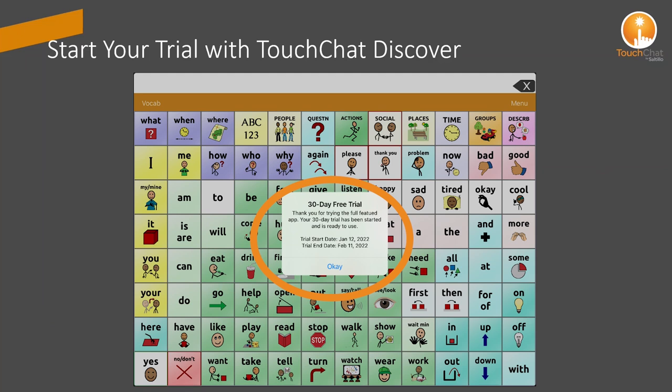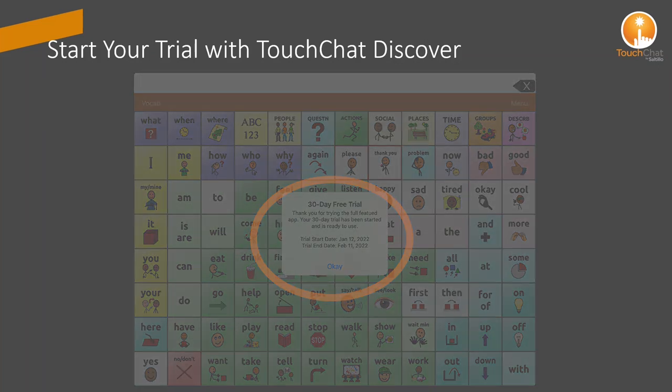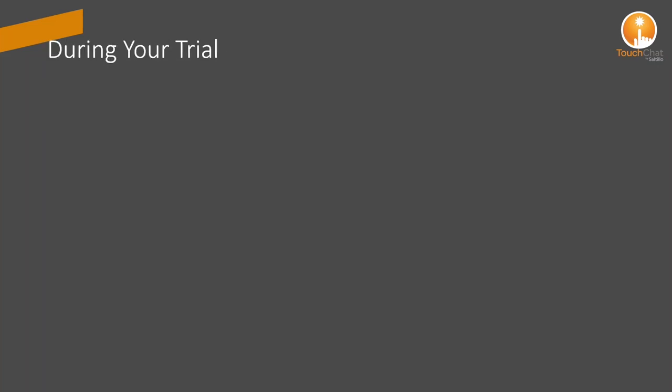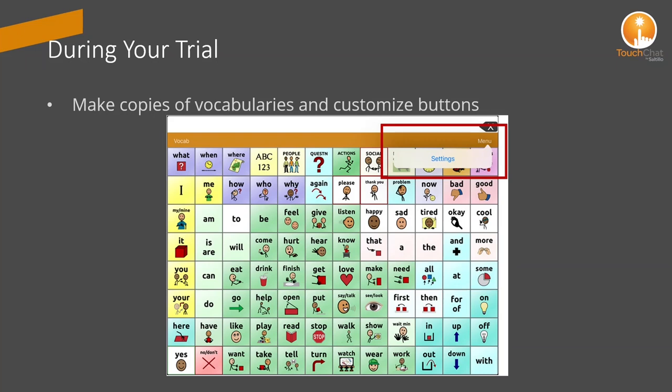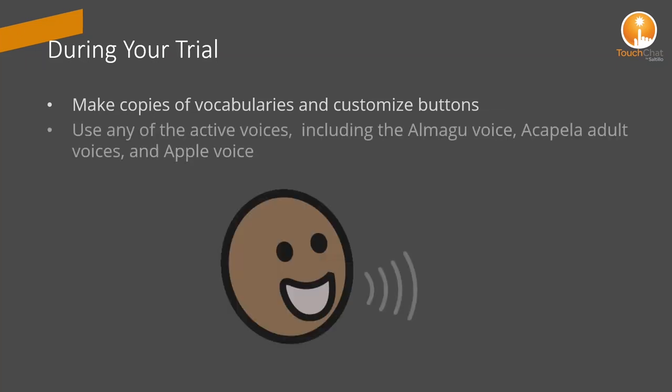The start and end dates will be displayed in the pop-up notification. During the 30-day trial period, you can explore many of the vocabularies available in Touch Chat and copy and customize buttons. You can also select and change voices during the trial, choosing from the Amalgo voices, Acapella adult voices, or the Apple voices. During the trial, you cannot purchase any additional voices.